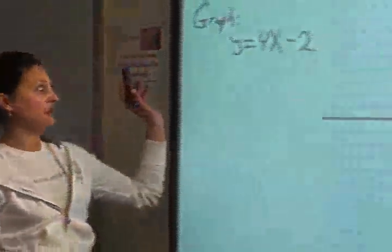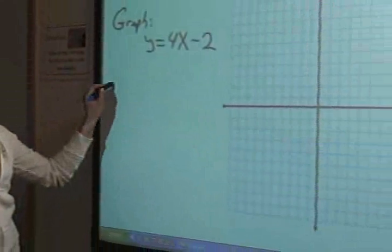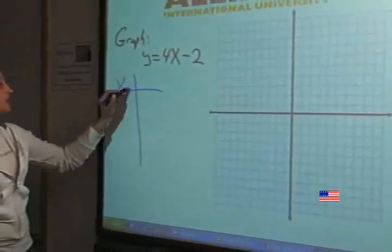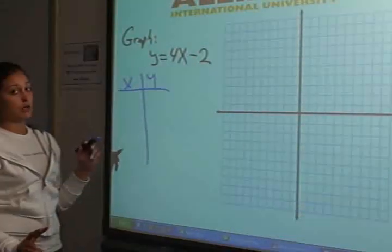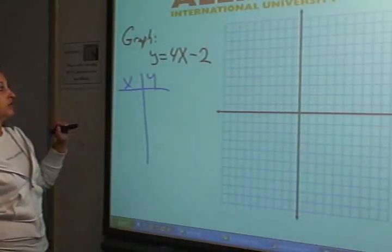Hey guys, today we are going to graph a line y equals 4x minus 2. We're going to do that by making a table, and basically we only need two points because that's all you need to make a line, but we're going to add one more to make sure that we did it right.